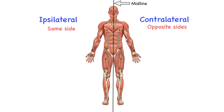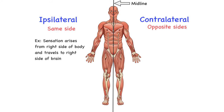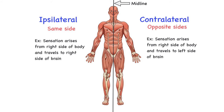For instance, if a sensation originates from the right side of the body and then travels to the right side of the brain, it is deemed ipsilateral. But if the sensation comes from the right side of the body and transmits to the left side of the brain, then it's considered contralateral. So if we are staying on the same side, it's ipsilateral; if it's crossing over, it's contralateral.